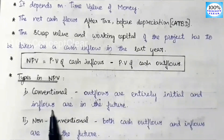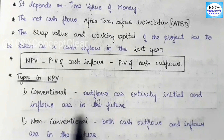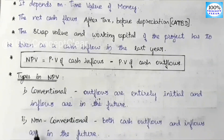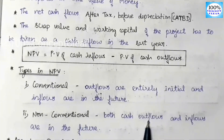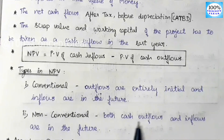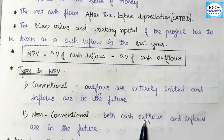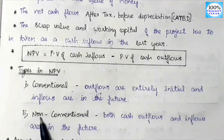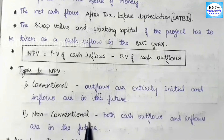In the future we get the return — each year one inflow value comes. The second type is non-conventional. In non-conventional NPV, both cash outflows and inflows are in the future. We can invest in the future as well. The investment is cash outflow, and both outflows and inflows occur over future years.